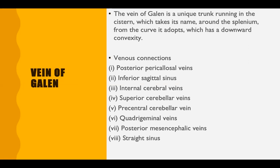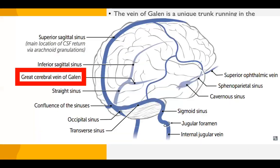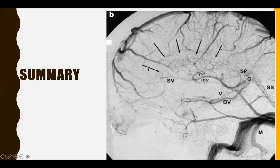The vein of Galen is a unique trunk running in the cistern around the splenium. Its venous connections include the inferior sagittal sinus, internal cerebral veins, basal veins, cerebellar veins, superior and precentral cerebellar veins, posterior pericallosal veins, and posterior mesencephalic veins. It drains directly into the straight sinus, which is clearly visible on DSA as the straight sinus, vein of Galen, and inferior sagittal sinus forming and draining into the straight sinus.